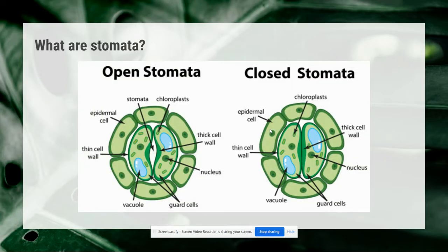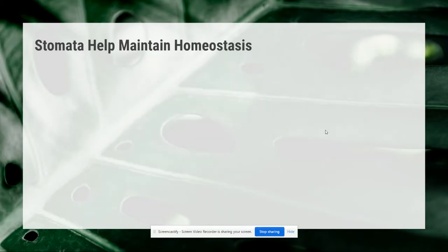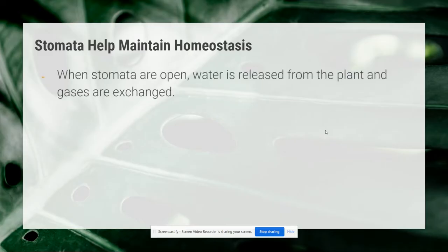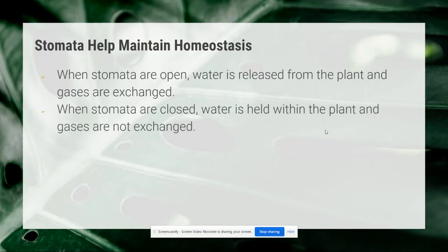We can see here a picture of what these stomata look like. An open stomata is going to allow certain gases and water vapor to come in and out of the plant. But when the stomata is closed, it's kind of like a wall — the plant is no longer exchanging that water vapor and gases. When stomata are open, water is released from the plant and gases are exchanged, like an open door. When the stomata are closed, water is held in the plant and gases are not exchanged.